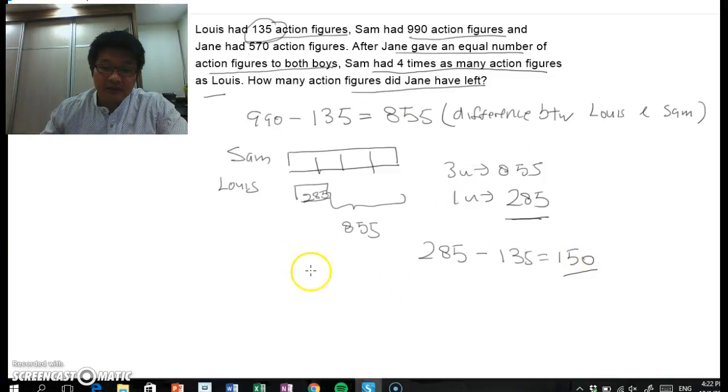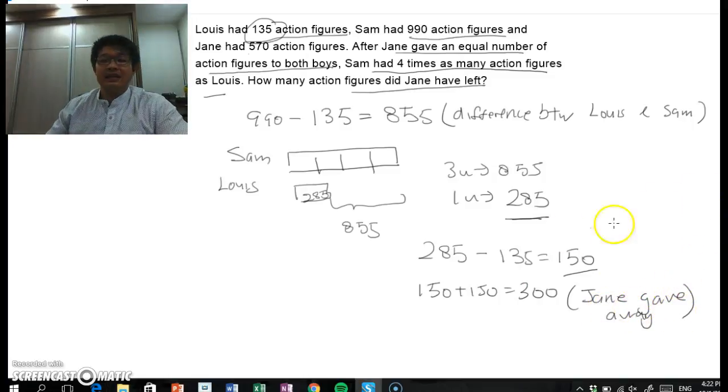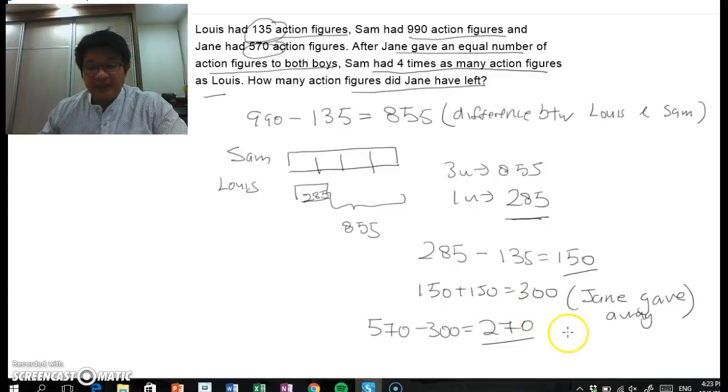So the number of action figures given away by Jane will be 150 plus 150, will be 300. So actually, Jane gave away this much. So to find out how much she has left, well, it's just going to be using 570, subtract away 300, will be 270.